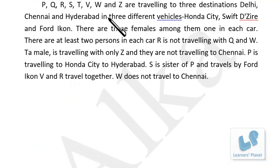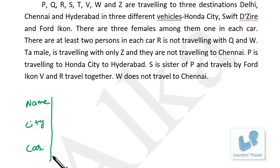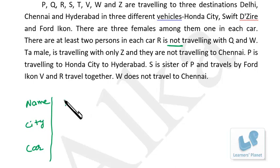Next puzzle: P, Q, R, S, T, U, V, W and Z are travelling to three destinations — Delhi, Chennai, Hyderabad — in three different vehicles: Honda City, Swift Dzire and Ford Icon. There are three females, one in each car, and at least two persons in each car, so the combination must be three-three-two. R is not travelling with Q and W. T, a male, is travelling with only Z and they are not travelling to Chennai.